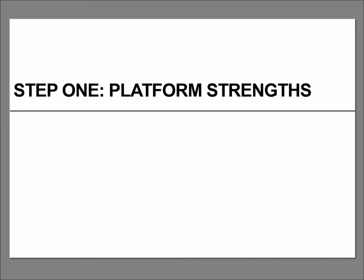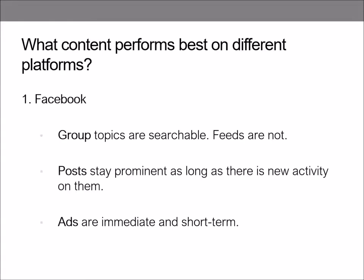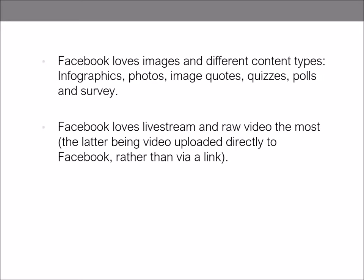Step number one of Plan Your Content: platform strengths. What content performs best on different platforms? First, we'll take a look at Facebook. Facebook is the perfect platform to maintain daily community building and interaction. It can grow conversations, present new ideas, conduct informal research, and grow your reach. Group topics are searchable but feeds are not, and posts stay prominent as long as there is new activity on them. Ads are immediate and short term. Facebook loves images and different content types — for example, infographics, photos, image quotes, quizzes, polls, and surveys. Facebook groups love these too.